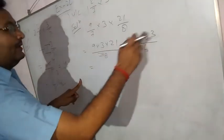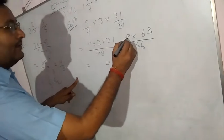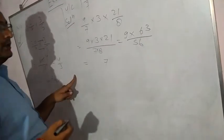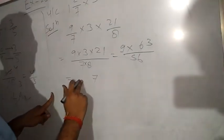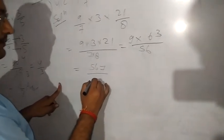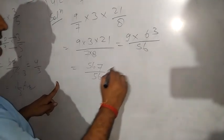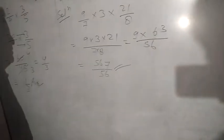Now 9 × 3 = 27, 7, 2 carry, 9 × 6 = 54, 54 plus 2 = 56 by 56. Now you can change this into mixed form. This is your homework. Skip, stop.